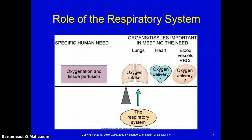The role of the respiratory system is to warm, humidify, and filter the air that we breathe in. In order to have adequate oxygenation and adequate perfusion, we have to have adequate intake of oxygenation. Our heart has to work well enough to deliver the oxygenation, and our red blood cells have to be proficient enough to carry that oxygenation to the rest of our body systems.